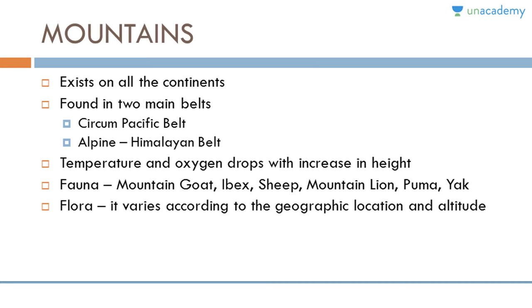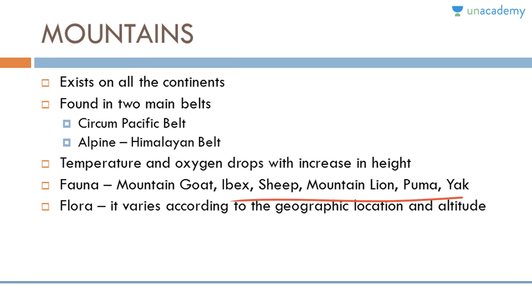Mountain biomes exist on all continents in two main belts: the circum-Pacific belt and the Alpine-Himalayan belt. Temperature and oxygen drop with increasing altitude. Animals found here include mountain goat, ibex, sheep, mountain lion, puma, and yak. Flora varies according to the geographic location and altitude of the mountain.